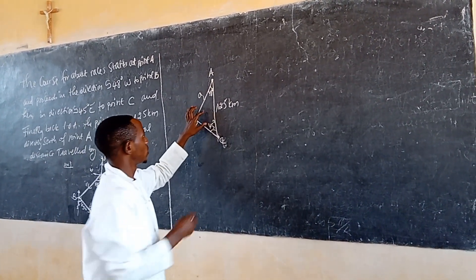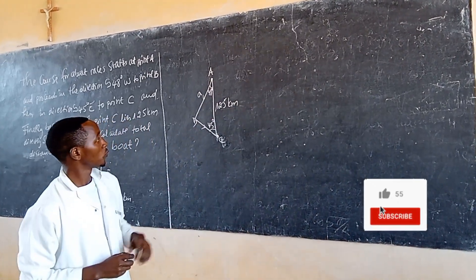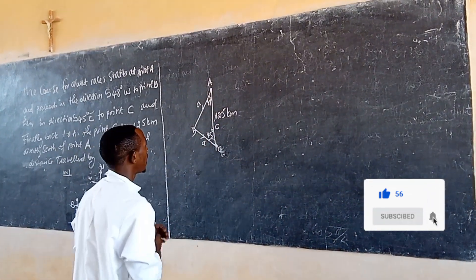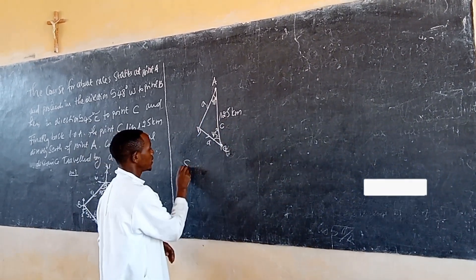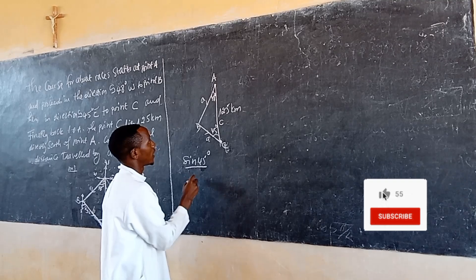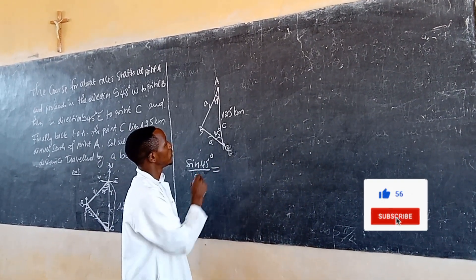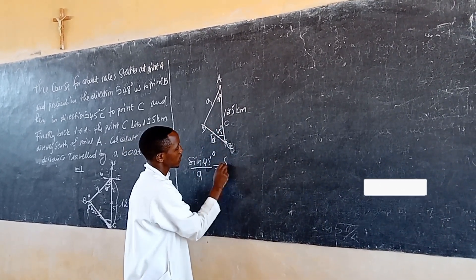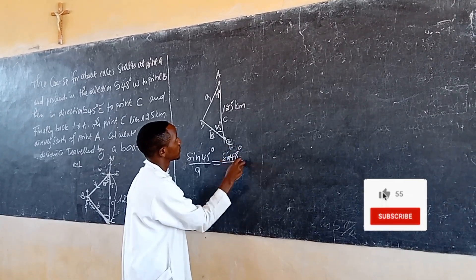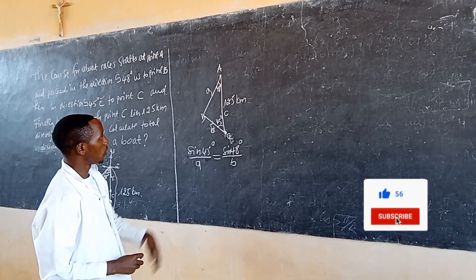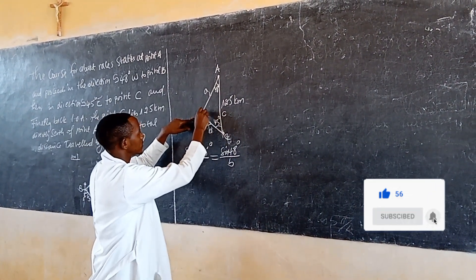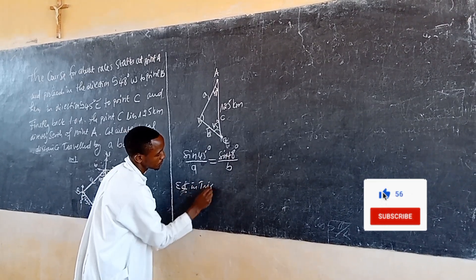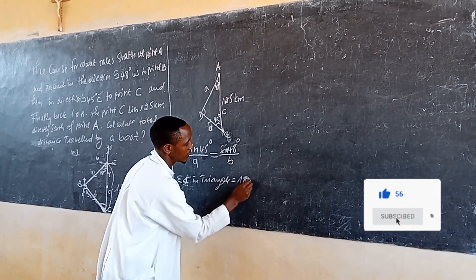Since we have two angles and one side, we can use the sine rule to solve the equation. Point A corresponds to one vertex. How to find this edge? By using sine of 45° divided by side A, this must equal sine of 48° divided by side B, where the sum of angles in the triangle equals 180°.